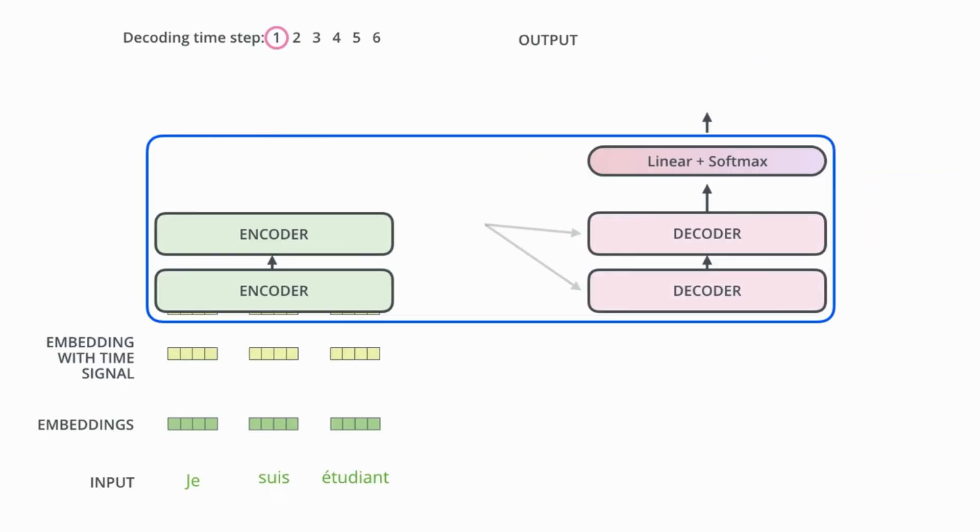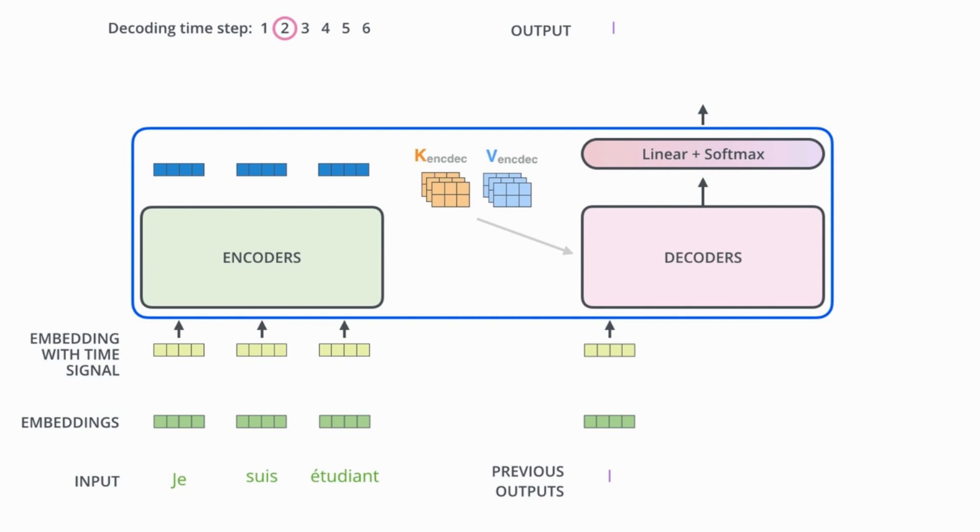The Transformer model consists of two key components, the encoder and the decoder, which are connected through a series of attention mechanisms that enable the model to focus on the most relevant parts of the input when generating the output. The encoder reads in the input text and transforms it into a high dimensional representation that captures the meaning of the text. This representation is then passed on to the decoder, which generates the output sequence word by word based on the input representation.